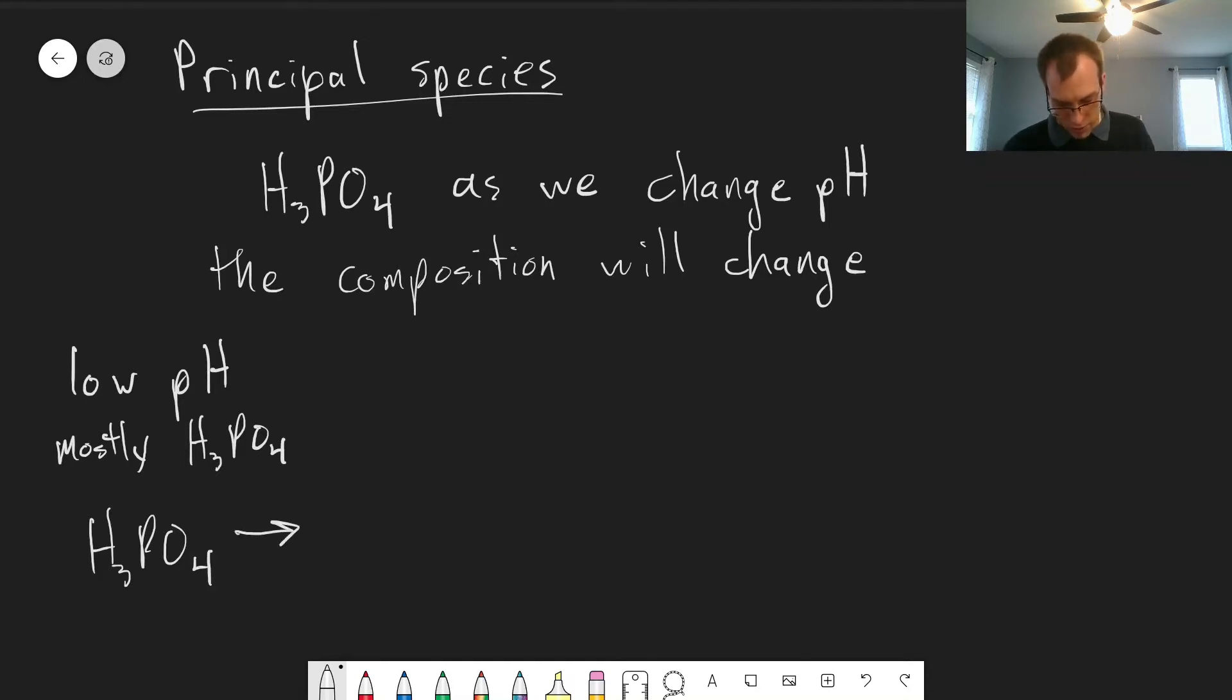Then if we start raising the pH, we'll reach a point where H3PO4 will equal H2PO4 minus. So as we start raising the pH, we're adding hydroxide or something, and it's deprotonating our H3PO4.